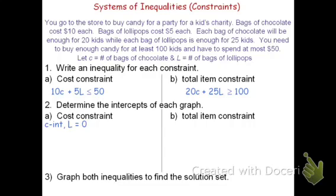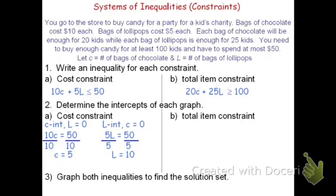To find the c-intercept for the first equation, we're going to say that l is 0. This leaves me 10c equals 50. Dividing by 10, we see that we can buy 5 bags of chocolate. Now if we put all of our money into the lollipops, we're going to say that there's no chocolate, or c is 0. Therefore, 5l equals 50, and we can buy 10 bags of lollipops.